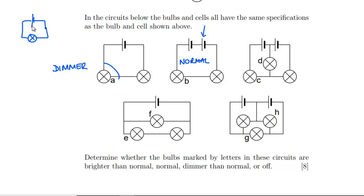In the third circuit, all they've done is stick a bulb through the middle — that's a change to the second picture. But nothing's changed at all for C; we've still got that outer loop, so C is still going to be normal.